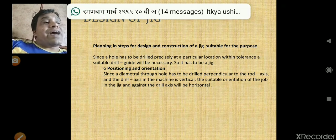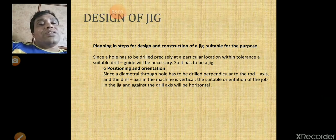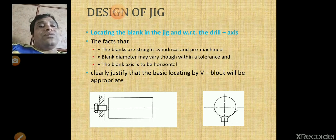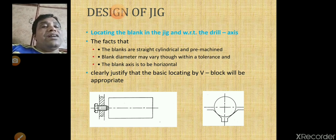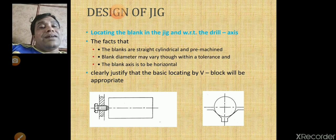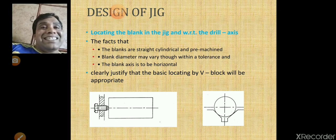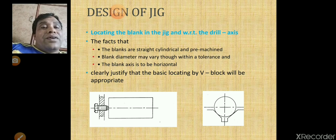Second step: locating the blank in the jig with respect to the drill axis. We locate the circular job on a V block. An adjustable locating pin is also used — if the length of the job changes, you can adjust the pin accordingly. Without changing the fixture itself, you can adjust the position of the axis to be drilled. So for locating, we use the V block and the adjustable locating pin.